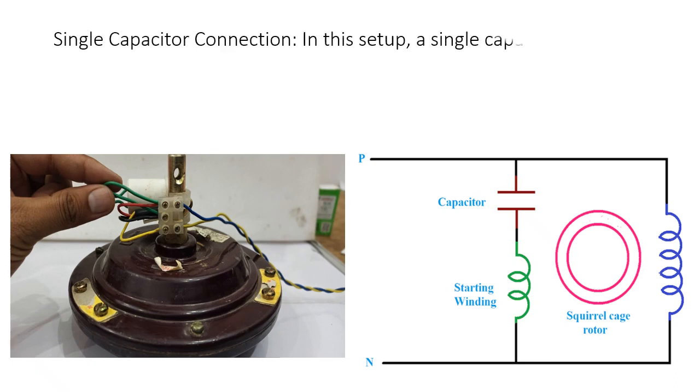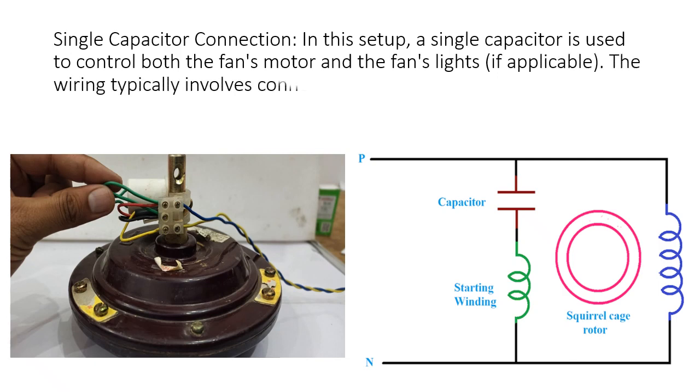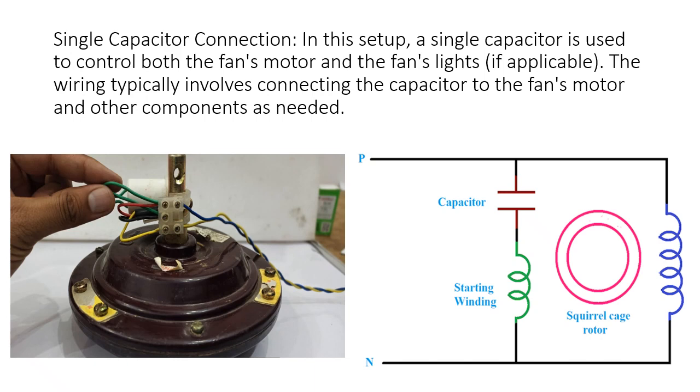Single Capacitor Connection: In this setup, a single capacitor is used to control both the fan's motor and the fan's lights, if applicable. The wiring typically involves connecting the capacitor to the fan's motor and other components as needed.